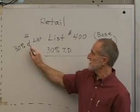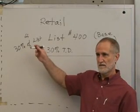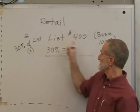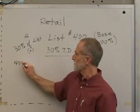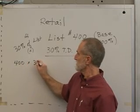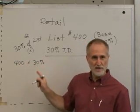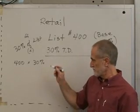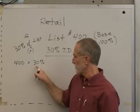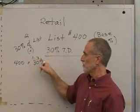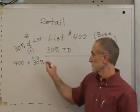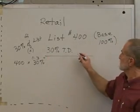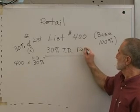So 'of' means what mathematically? It means times, multiply. So 30% times 400, you can punch in 400 times 30%. If you have a simple calculator, as soon as you hit the percent sign, it'll give you the answer. If you have a scientific calculator, you might want to change that to a decimal and say 400 times .3 equals. And what do we get? Everybody get $120?